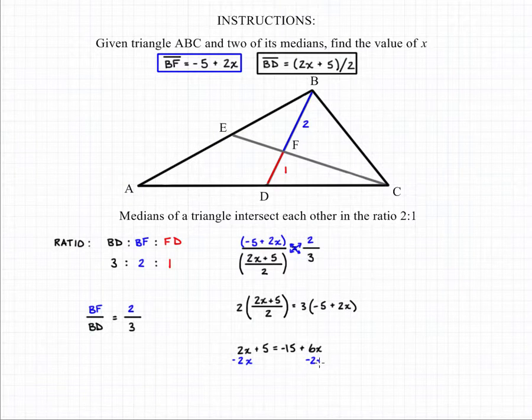We subtract 2x from both sides of the equation, which gives us 5 = -15 + 4x. From here, if we add 15 to both sides, we'll end up with 20 on the left being equal to 4x on the right.